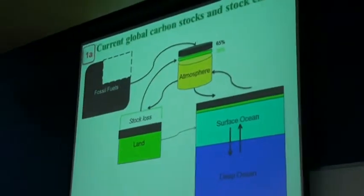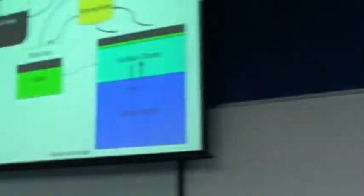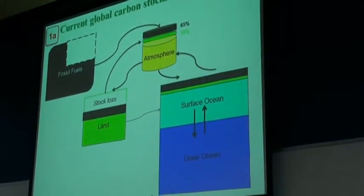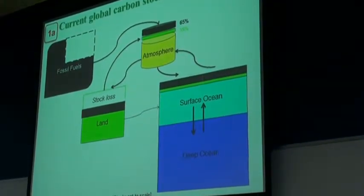About 35% of the carbon dioxide that's currently in the atmosphere has actually come from the land sector over many hundreds of years of land clearing. That's why I have a green section in the atmosphere representing carbon from the land, and the other part has come from fossil fuel emissions.